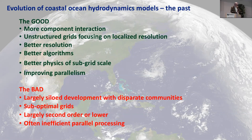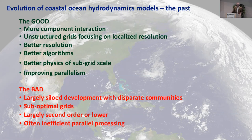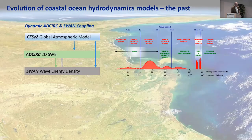The bad news: we've got largely siloed communities still in development — we're not talking enough to each other. The grids have been very suboptimal; we really haven't put all the homework into that. And if you look at what kind of models existed in the 1960s for shallow water equations, they were kind of second-order accurate — and for the most part, most models are still second-order accurate today. That doesn't match well with computer technology, and there's often very inefficient parallel processing.